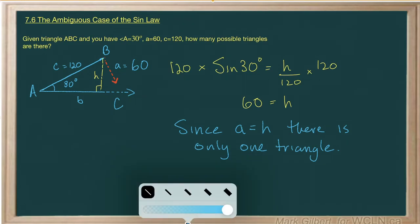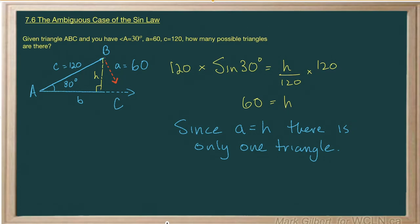You see, let me just draw this in there. If a, if the height is 60, and a is 60, they're the same. So we end up, side a just touches the side b there at a right angle, so there's only one triangle.